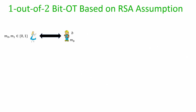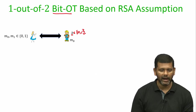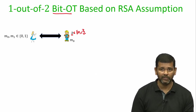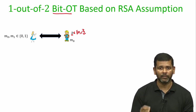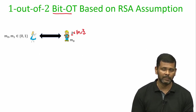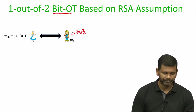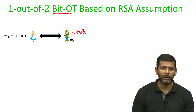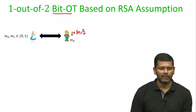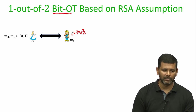Based on that, let us see the construction of a simple 1-out-of-2 bit OT. It is called bit OT because the sender Alice has a pair of bits M0 and M1 as her private input, and receiver Bob has a choice bit B as his private input. We want a protocol where Bob receives only M_B — if B=0 he gets M0, if B=1 he gets M1 — without learning the other message. Conversely, Alice should not learn Bob's choice bit B.